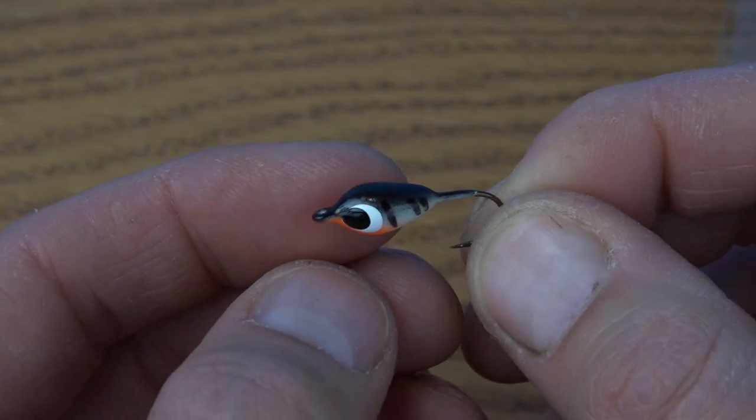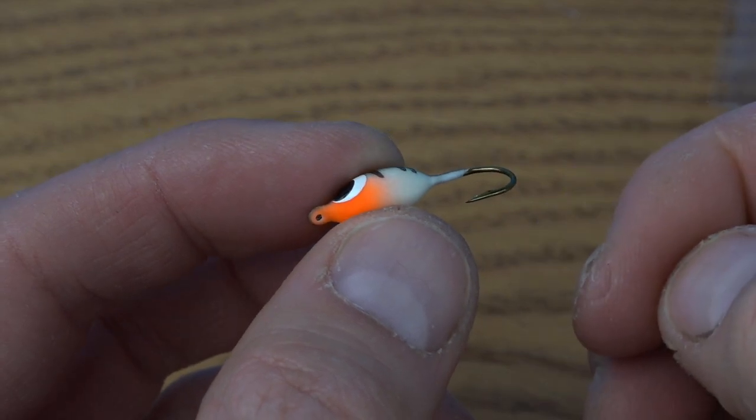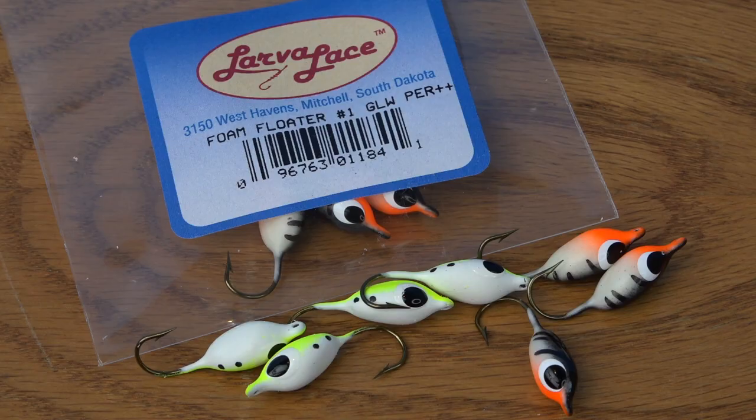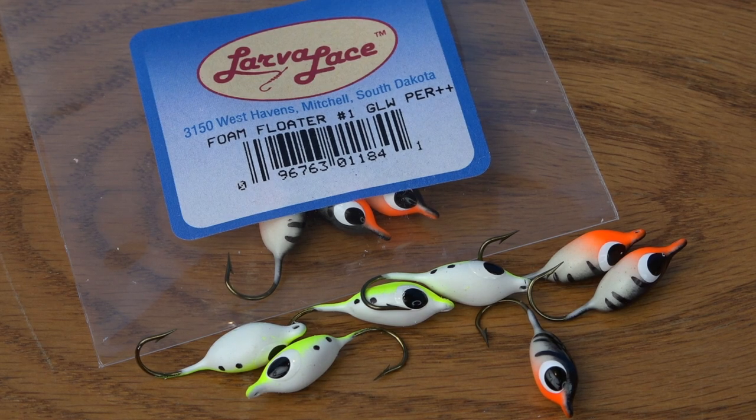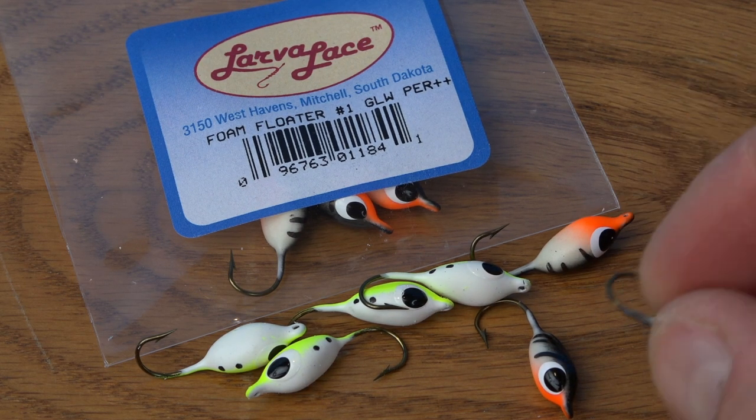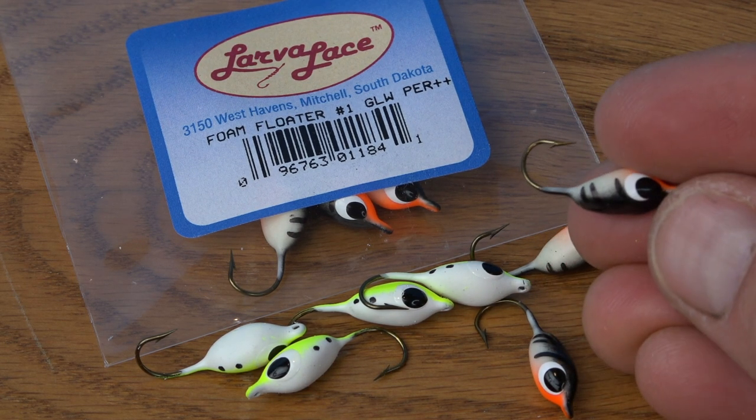If this little floater looks familiar to you, you've probably seen it at the end of a walleye rig. These little floaters aren't just for walleye fishing anymore, and I'm going to show you how to use them to make a really great panfish popper for aggressive spring bluegills.